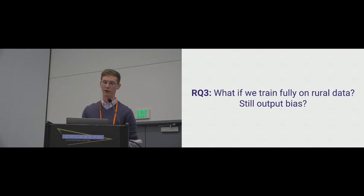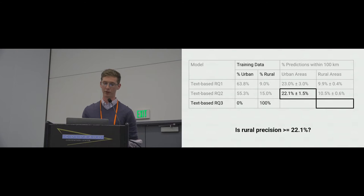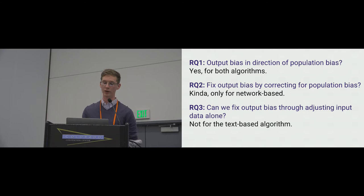That brings us to our final research question: can we address this one particularly stubborn instance of output bias — the rural performance of the text-based algorithm — by training our model on 100% rural data? This would be akin to training a geolocation algorithm for rural tweets only. We want to know if we can boost rural precision to that of urban areas, at a minimum where it was in the population-balanced model. And we still don't get there, despite using training data only from rural areas. It's close, but still significantly lower precision.